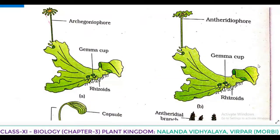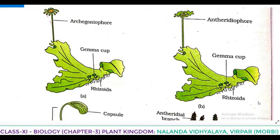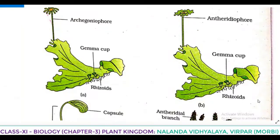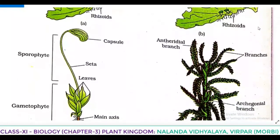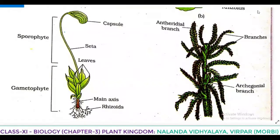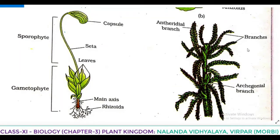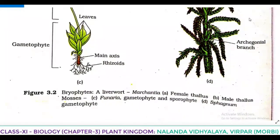In the mosses figure, that is Funeria — in that both gametophyte and sporophyte you can see in the same plant. And the next is Sphagnum gametophyte is given. So here now we are not going to discuss in detail regarding this; whenever the topic connected to this is coming, we will explain in detail.